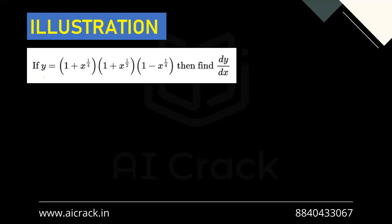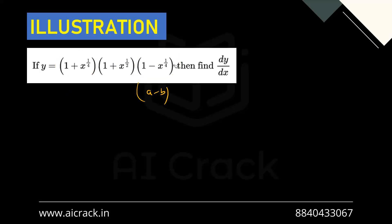Now let's solve: if y = (1+x^(1/4))(1+x^(1/2))(1−x^(1/4)), find dy/dx. If you look carefully, (1+x^(1/4)) and (1−x^(1/4)) are of the form (a+b)(a−b), so multiplying them gives a²−b².